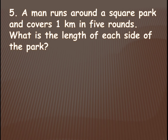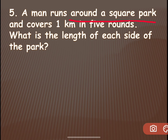A man runs around a square park and covers one kilometer in five rounds. What is the length of each side of the park? It is a square park, so all sides will be equal. Whenever we are running, we run on the border line of the park — that becomes the perimeter. Since he is running around the square park, it is the perimeter.